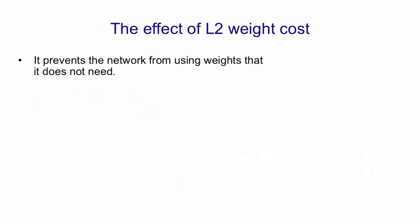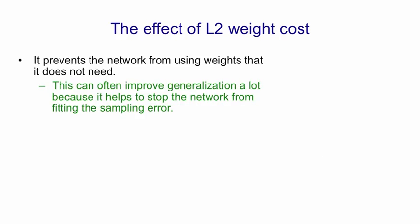The effect of an L2 penalty on the weights is to prevent the network from using weights that it doesn't need. This often improves generalization a lot because it can use those weights that it doesn't really need to fit the sampling error.